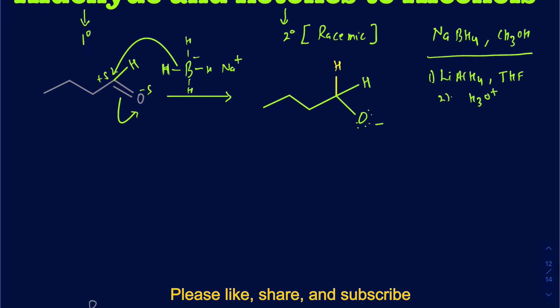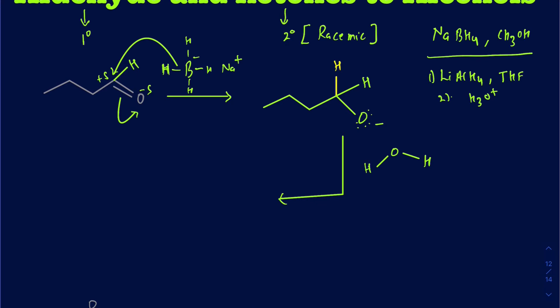In the second step, you go ahead and protonate the alkoxide ion that you just made. You can use water to protonate it. If you're using methanol as solvent, you use methanol to protonate it; if water, use water. You may also see in books that a dilute acid is used to make sure all the alkoxide is protonated.